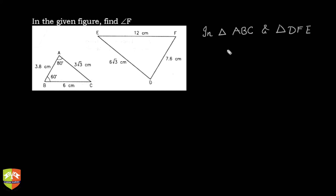So let's say in triangle ABC and DFE, what do we see? You can check AB by DF. Let's find out AB upon DF. It's better to write DF here, so AB by DF. AB upon DF is how much? AB is 3.8 cm.